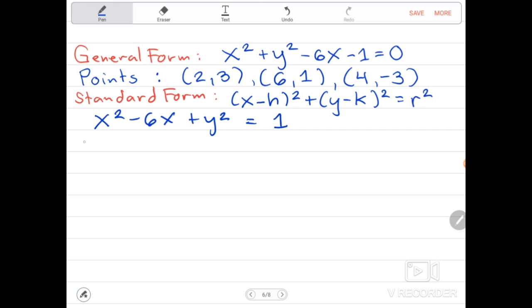Completing the square for x, we have negative 6, the constant of x. Negative 6 divided by 2, the quotient will be negative 3. Then we are going to square it, we will be having 9. So add both sides by 9 to make the equation balance.